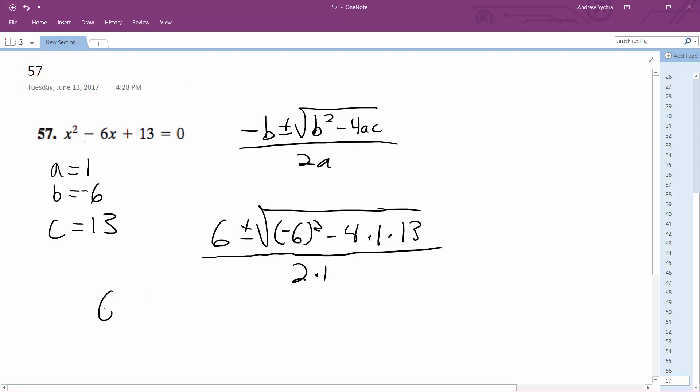All right, so it's going to be 6 plus or minus the square root of 36 minus 52 all over 2. So this is equal to 6 plus or minus the square root of negative 16 all over 2.